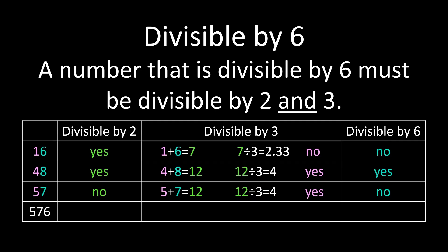For our last example, 576, we'll look at the same test. The final digit is a 6, making this an even number, so it is divisible by 2. Then we'll be adding all of our digits together: 5 plus 7 plus 6, and we get 18. We're looking at whether 18 is divisible by 3, and it is. So because 576 is divisible by 2 and by 3, it is also divisible by 6.